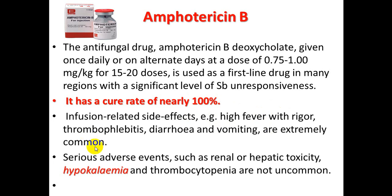Amphotericin B has a cure rate of about 100%. Infusion-related side effects — usually fever, rigors, thrombophlebitis, diarrhea, and vomiting — are extremely common. The most important serious adverse effect is hypokalemia, so patients on amphotericin B need daily assessment of potassium level, because hypokalemia can be fatal.